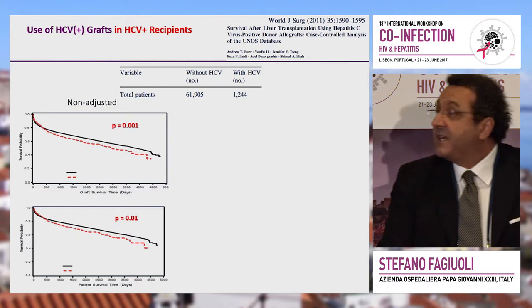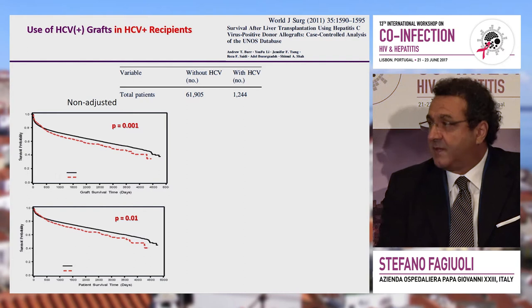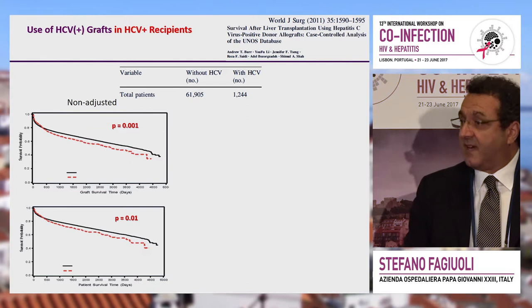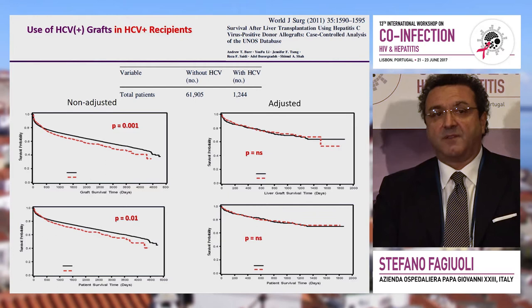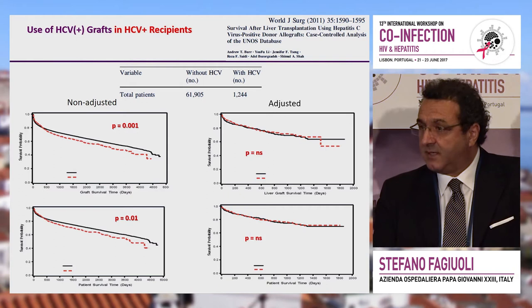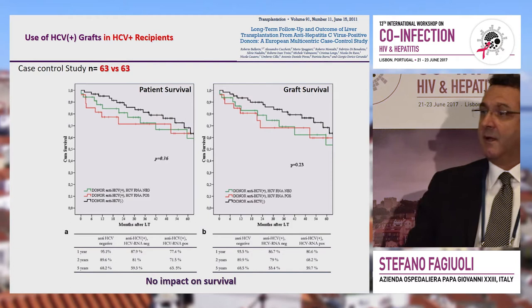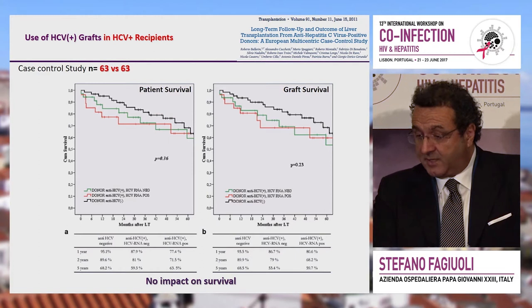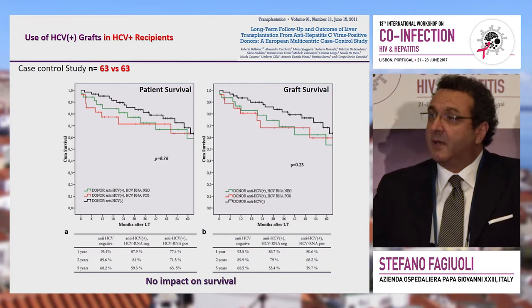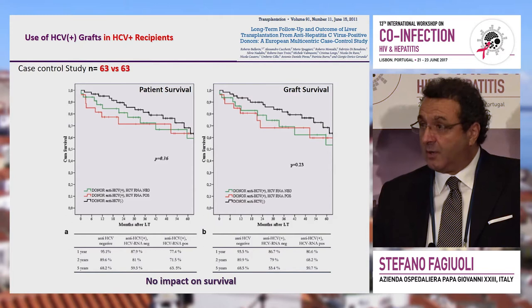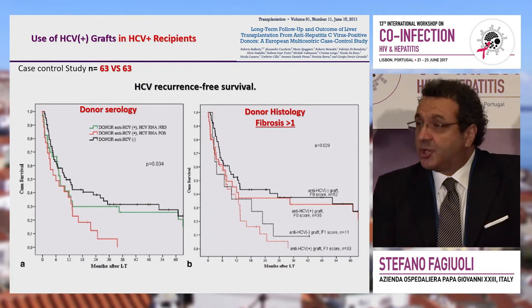Looking at over 1,200 patients who received an HCV positive graft versus 65,000 transplanted with normal grafts, there is a difference in survival. But when you adjust for MELD, etiology, comorbidities, and waiting list timing, there is no longer a difference in receiving an HCV positive organ if you are HCV positive. A European case-control study matching 63 transplants with non-HCV positive organs against 63 with HCV positive organs showed no difference in patient or graft survival, dividing patients between replicating, anti-HCV positive but no longer replicating, and antibody-negative.